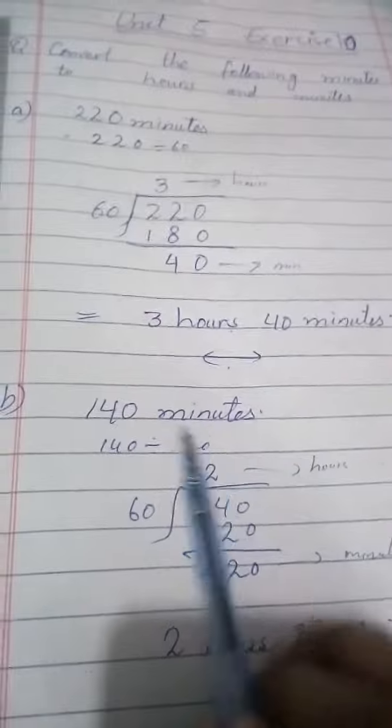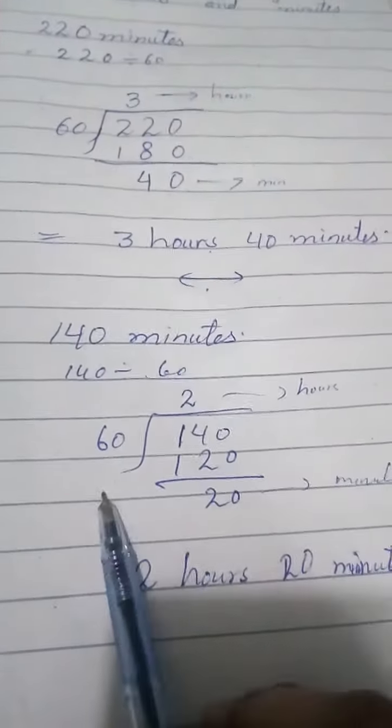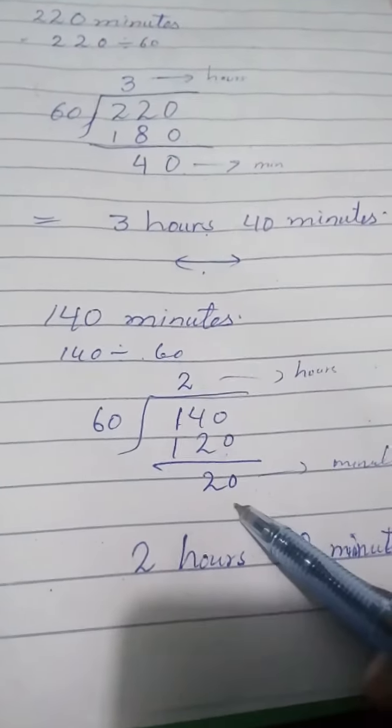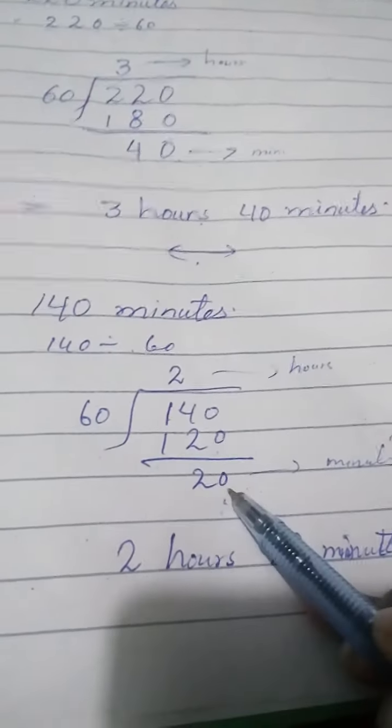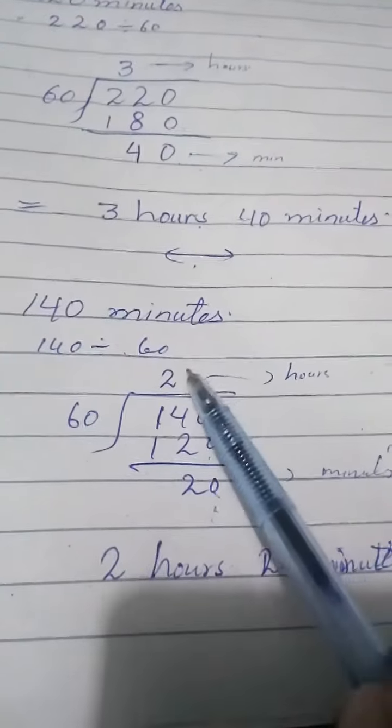Again divided by 60. Write inside the division sign: 60 times 2 is 120. By subtracting 120 from 140 we get 20. This is less than 60, so we cannot do further action. The answer is 2 hours and 20 minutes.